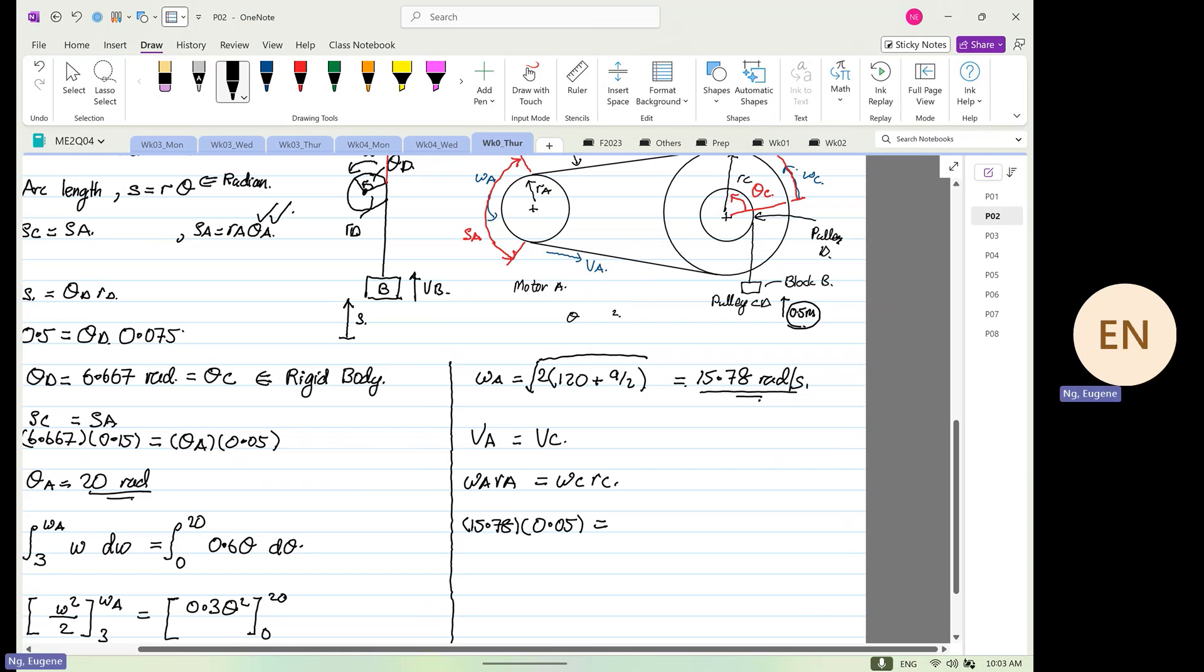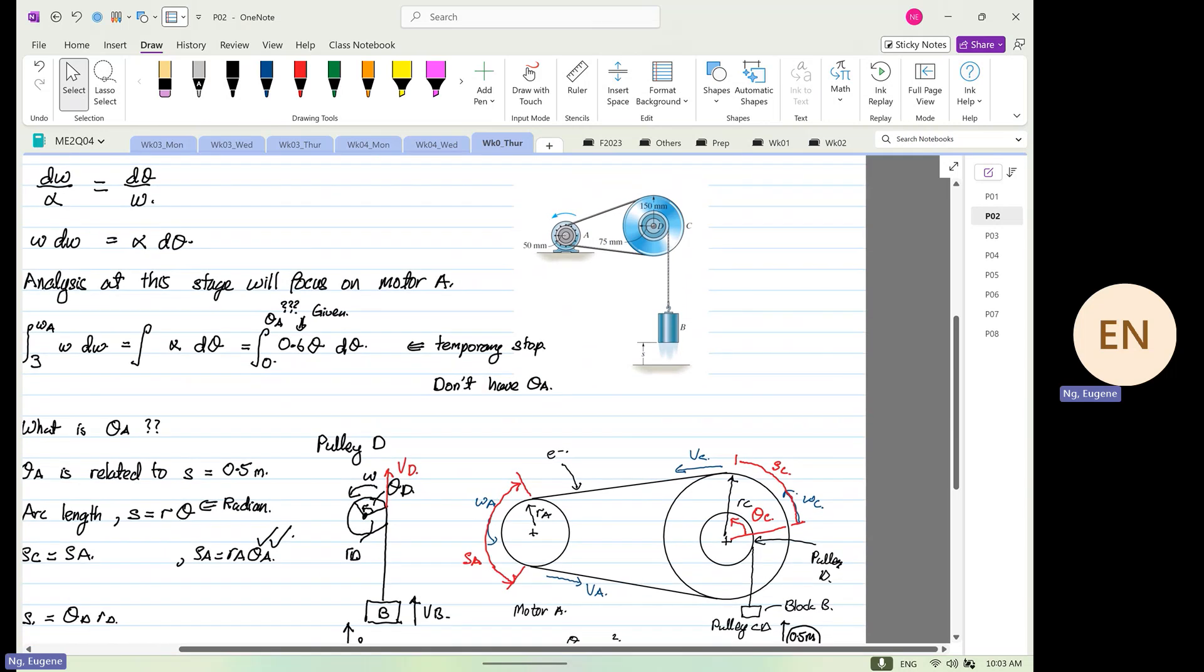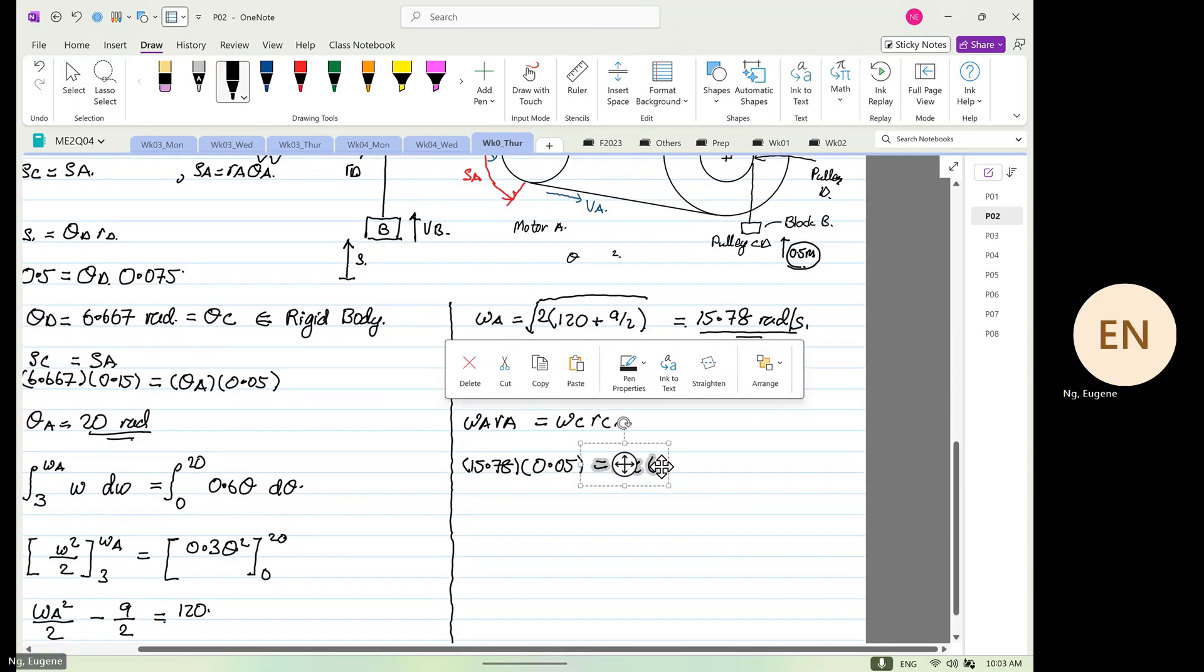And then we have omega c is what we want to find out. r_c is equal to 0.15. So omega c will be equal to 15.78 times something, it is equal to 5.26 radians per second. And this is also equal to omega d because of what? Again, rigid body.